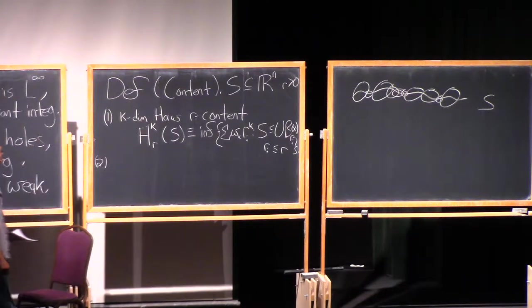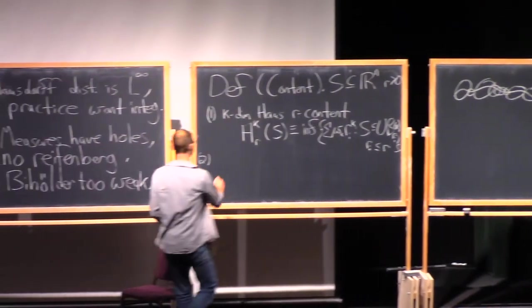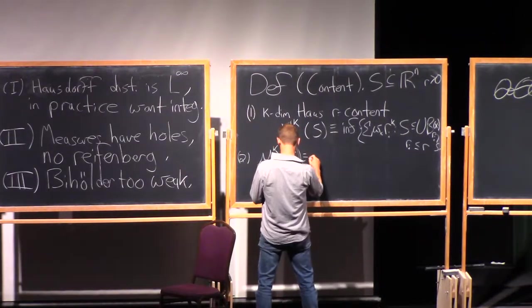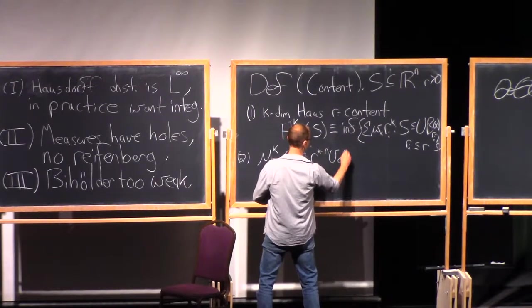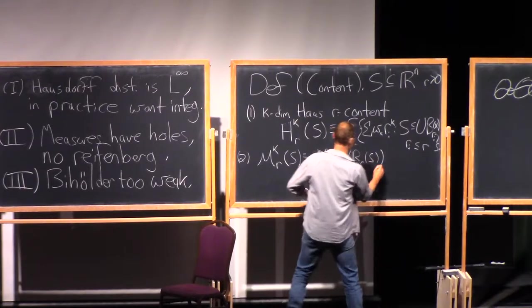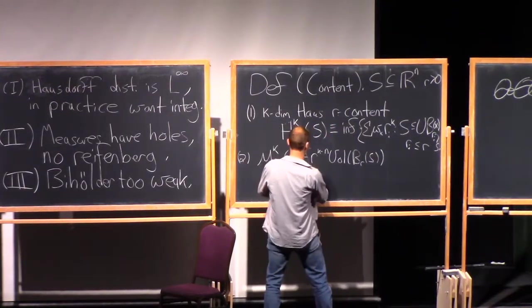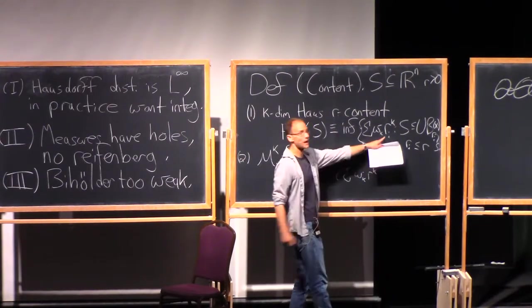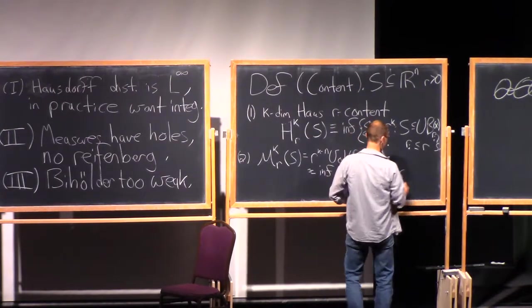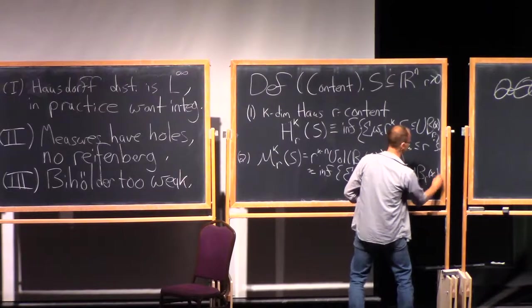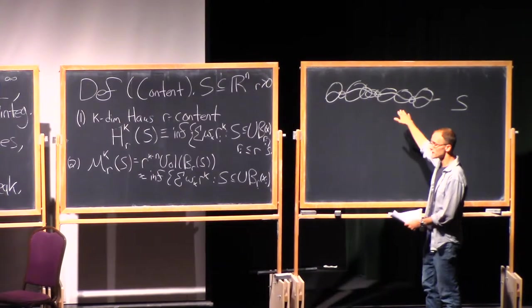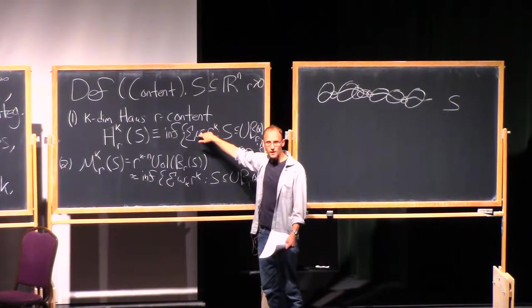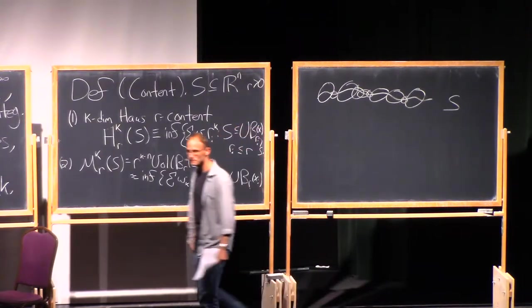Two. The K-dimensional Minkowski R-content is the following. So this is, we can write this two ways actually. It's R to the K minus N times the volume of the ball of radius R around S. Equivalently up to a constant, that this is the infimum over the sums of the K-dimensional volumes of balls of radius R. The R-I are not allowed to vary anymore. Such that S is contained inside the union of the balls of radius R of X-I. So for Hausdorff, I can get any covering I want. For Minkowski, I have to cover by balls of radius R. So it should be clear, this guy here should be bigger than this in principle. I'm very much restricting the amount of covers I have here. They all have to have the same size to them.